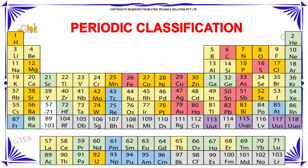Here is the periodic classification. The arrangement of elements in the periodic table is shown here. There should be some property match among the elements to put them in this order. We will look into those areas now.